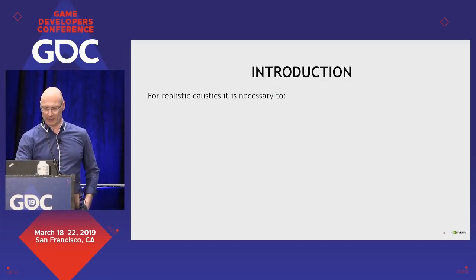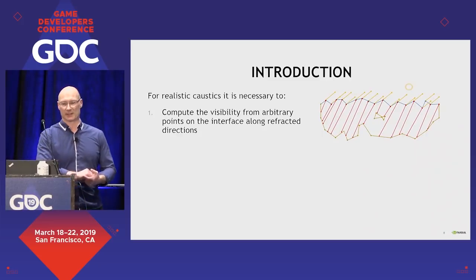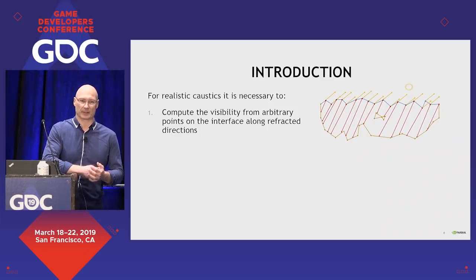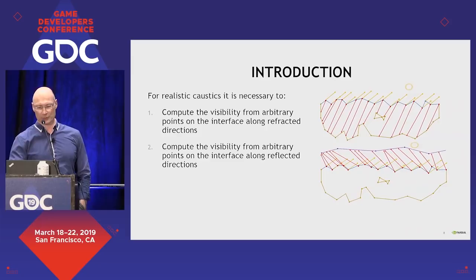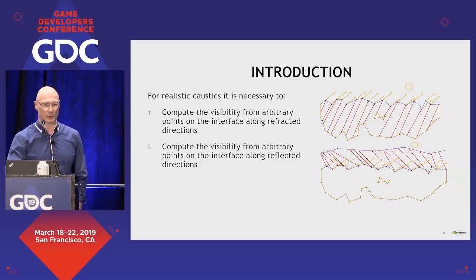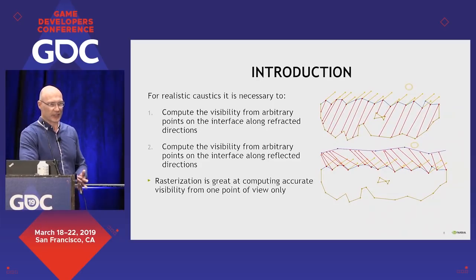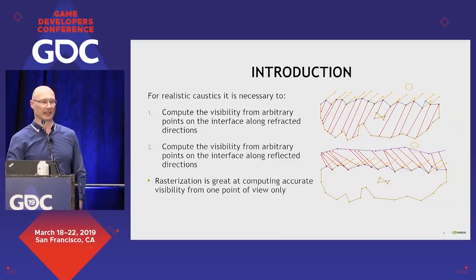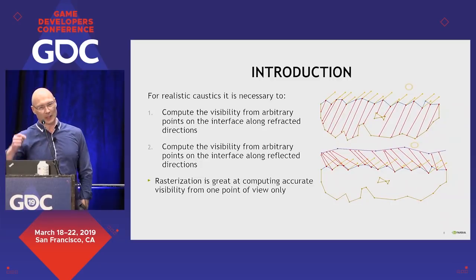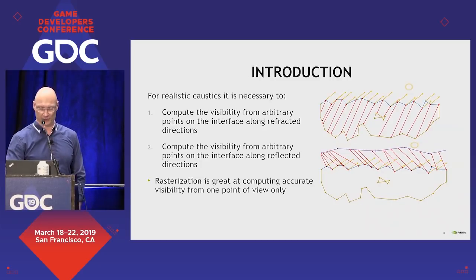What is necessary to render realistic caustics? Light coming from the sun hits the water surface, changes direction, gets refracted along some direction, and you need to follow these refracted rays of light to really find out where the light ends up in the scene. The same is true for the reflected part of the light — it also just ends up somewhere, hitting perhaps above-water geometry, or going off into the sky. Rasterization is really great, but it is typically only great at doing visibility from one point of view. That's not what you need here, because you need to find out what can you see from an arbitrary point on the water surface along some direction — and that's not what rasterization is good at giving us.